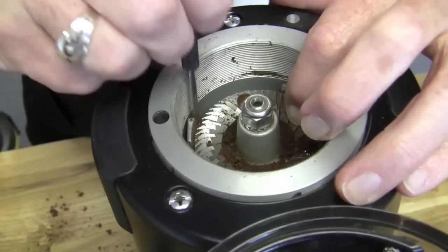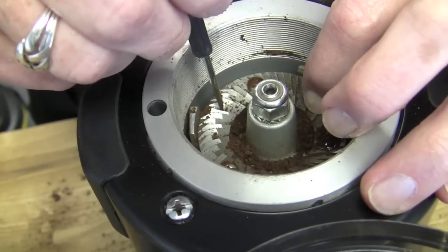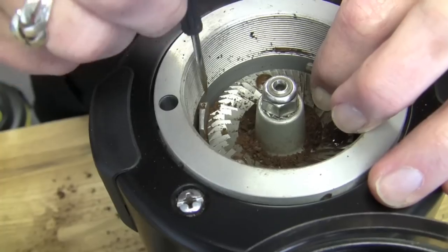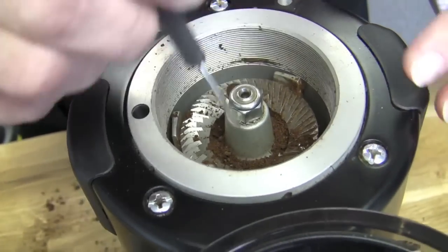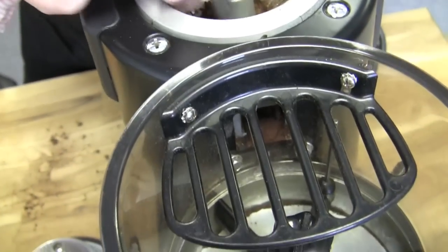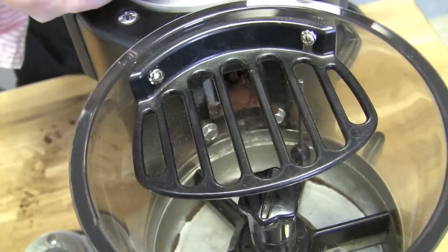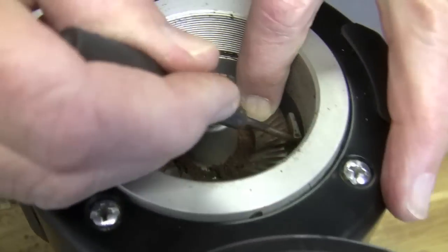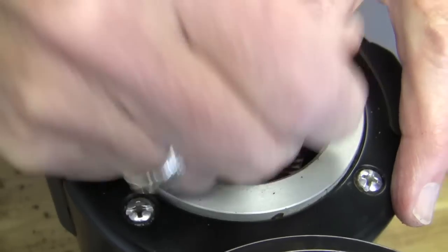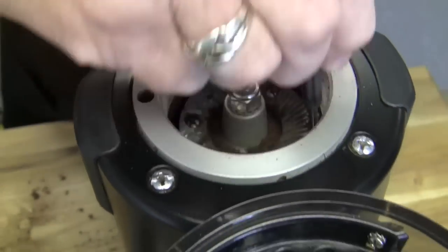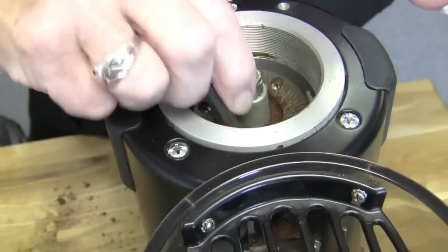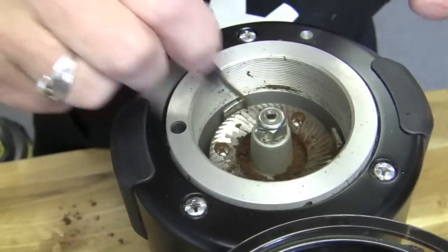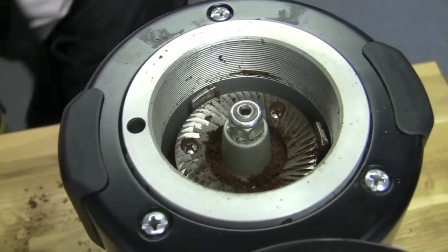On the surface of these, too, as these go around, the ground coffee exits the burrs, comes down here, and these paddles actually push the ground coffee around until they get to the chute, which is right here, and then they go down. So you'll see coffee on the surface of these. You want to get that off there, too.